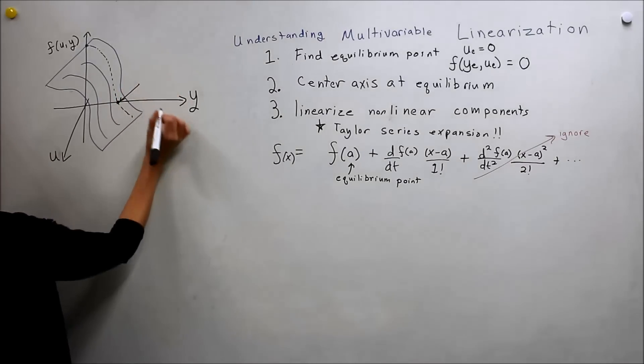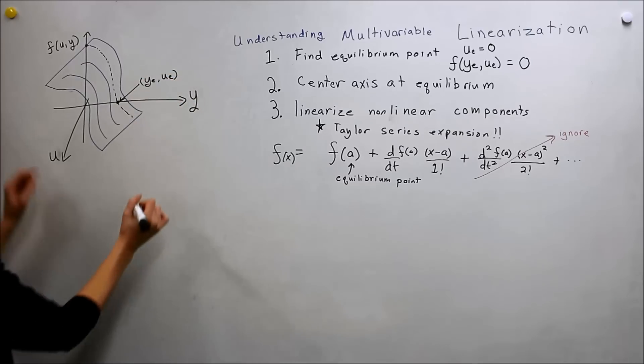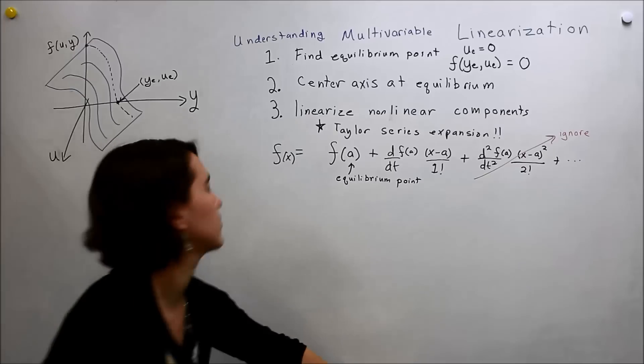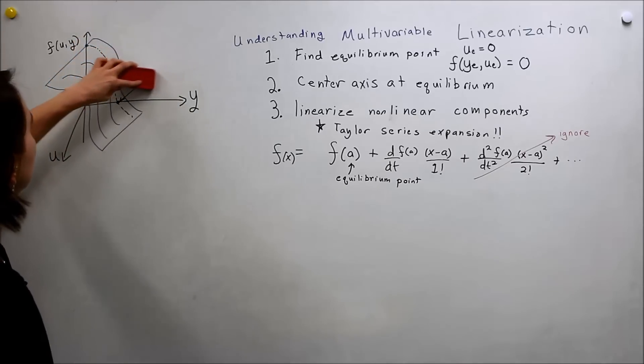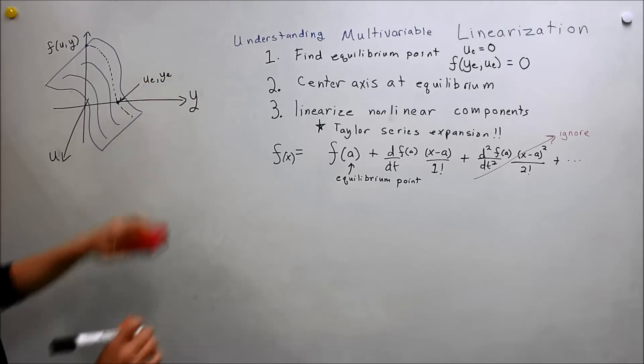And so this would be u, well, we'll say y, y_e and u_e. I guess I'm not being consistent with axes. We'll call it, let's put u_e first. Okay, so u_e, y_e. So that's our point there.